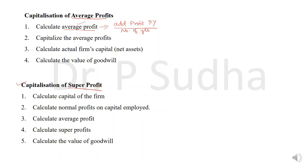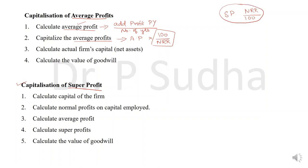Your next step is to capitalize the average profit. For capitalizing the average profit, take average profit multiplied by 100 divided by normal rate of return — that will be given in the question. Under the super profit method we did normal rate of return divided by 100, but under capitalization of average profit you reverse it: 100 divided by normal rate of return.